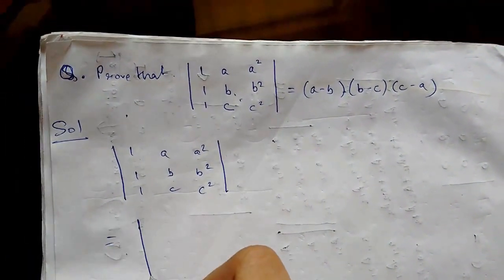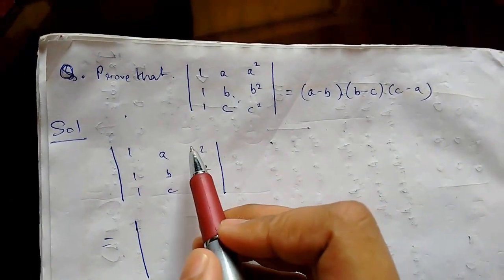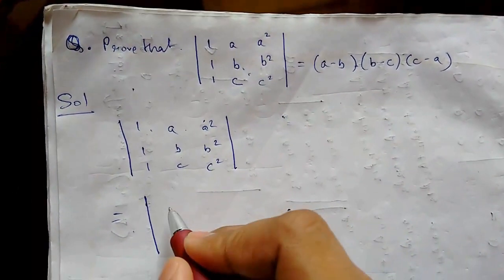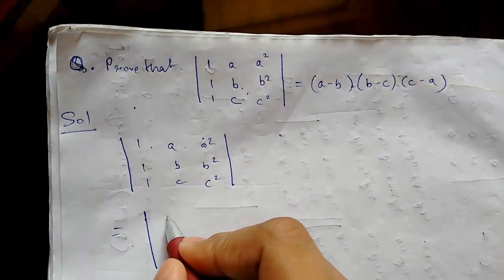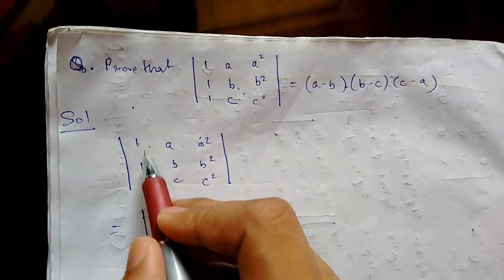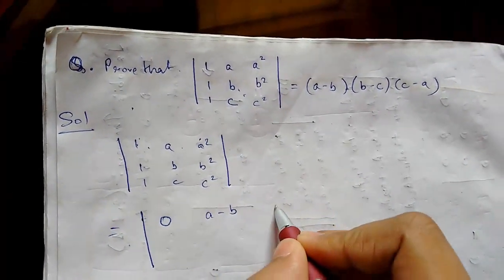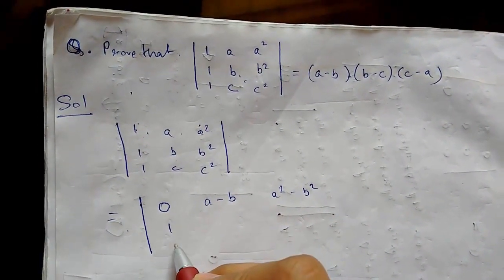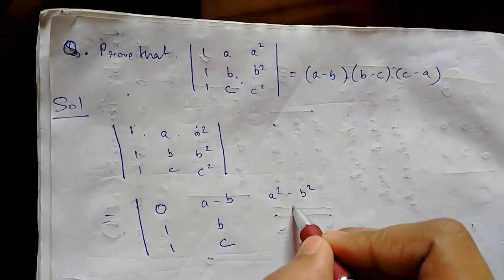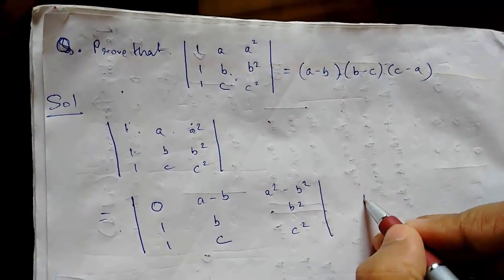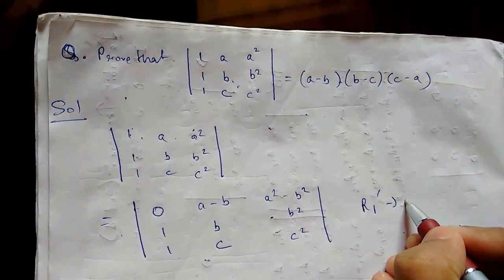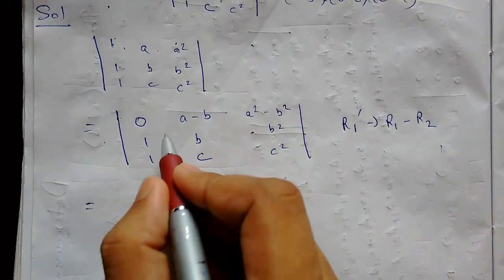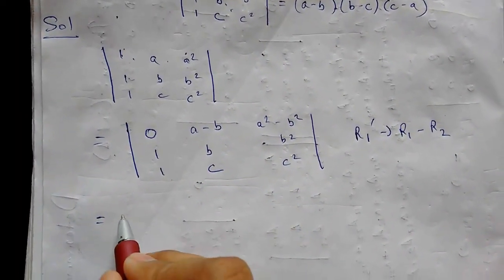We will make changes in R1 such that R1 minus R2. So row 1 becomes: 0, (a minus b), (a² minus b²). Row 2 and row 3 remain constant. So we have R1 dash = R1 minus R2.